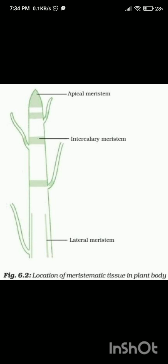Meristematic tissues are special types of plant tissues that are responsible for growth and development of plants. To understand it properly, imagine your body is like a building. Just as a building needs workers to add new floors or rooms, similarly plants also need a special type of tissue to grow and develop.